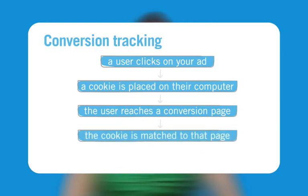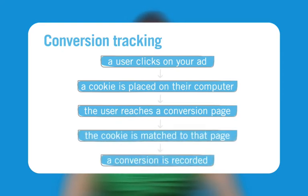When a match is made, Google records a successful conversion for you. The cookies Google uses expire in approximately 30 days, ensuring that the privacy of users is protected.